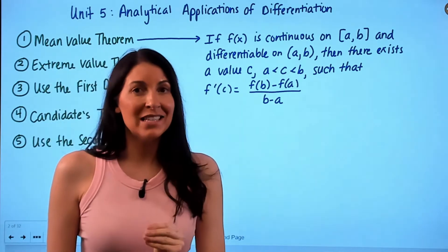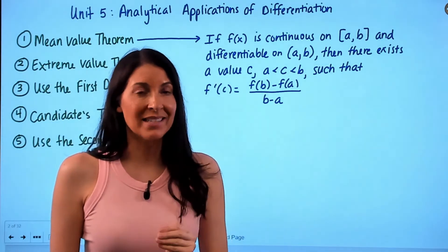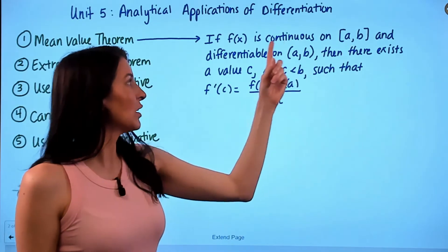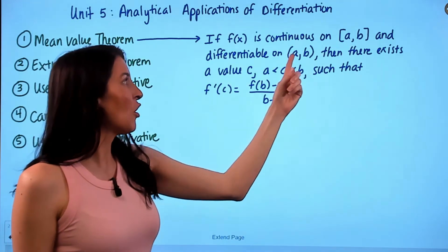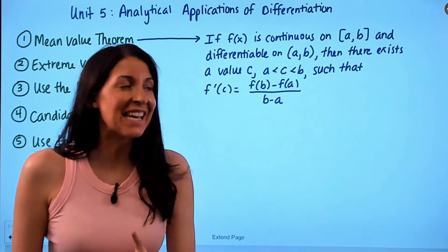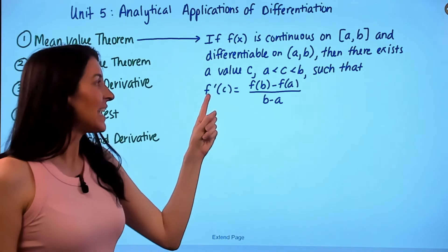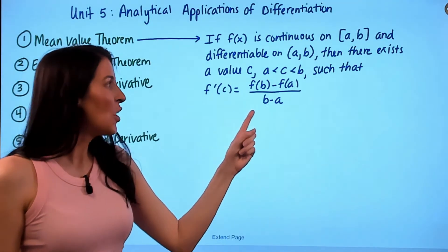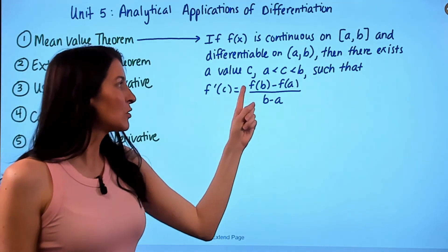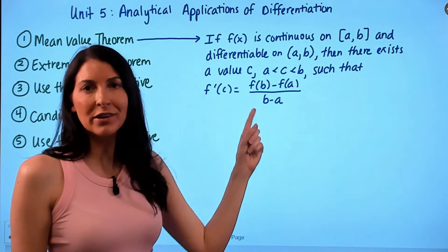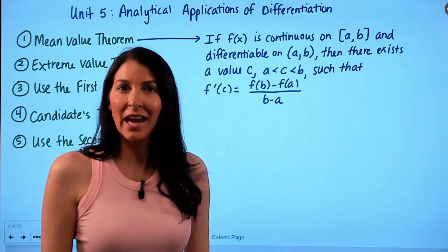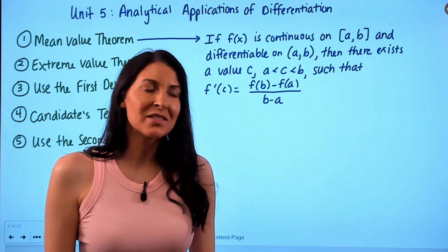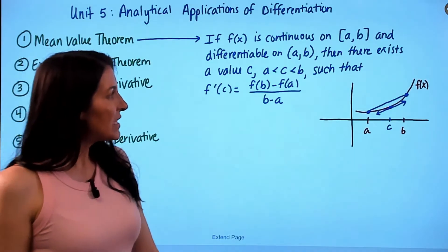As long as the conditions are met — that f is continuous on the closed interval and differentiable on the open interval — you are guaranteed that the instantaneous rate of change at c will be equal to the average rate of change over the interval [a, b]. Let me show you what this looks like on a graph.